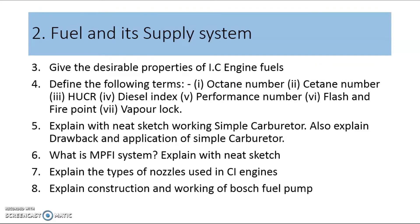Unit two is a combination of fuel properties and its supply system. I have selected two important questions from the fuel property. The first one is the desirable properties of IC engine fuels, and the rating based on different numbers for IC engine fuels — that is octane number, cetane number, HUCR, diesel index, and so on. From the fuel supply system for the petrol engine, the simple carburetor and its working is an important question, as well as the drawbacks of the simple carburetor.